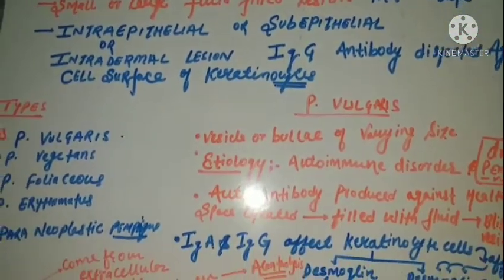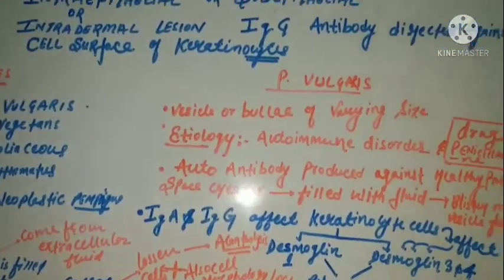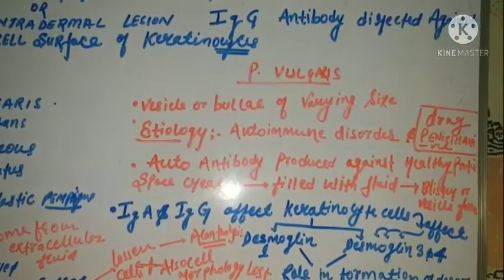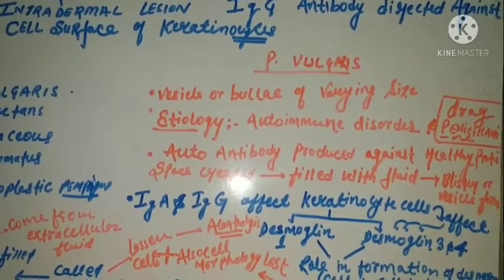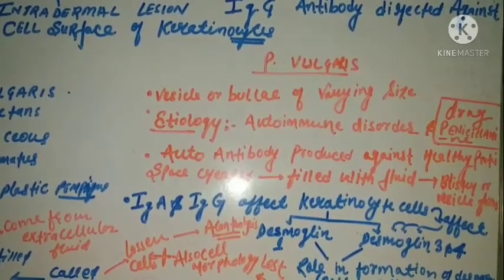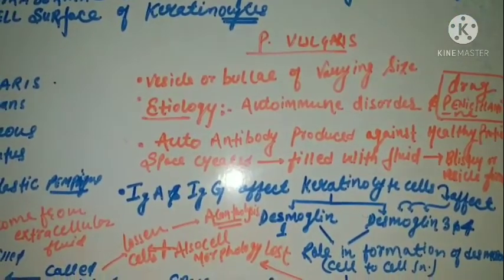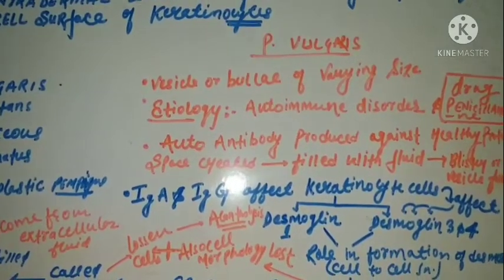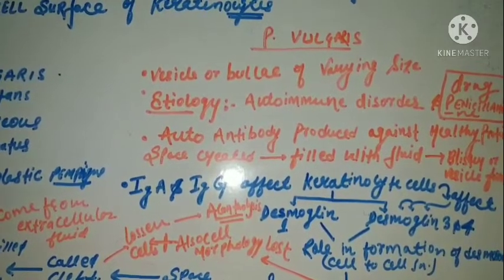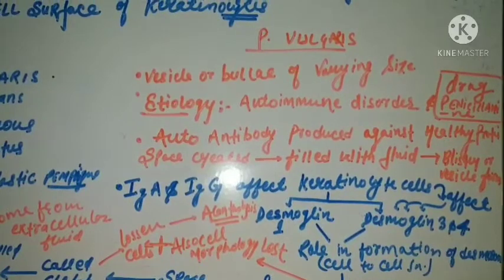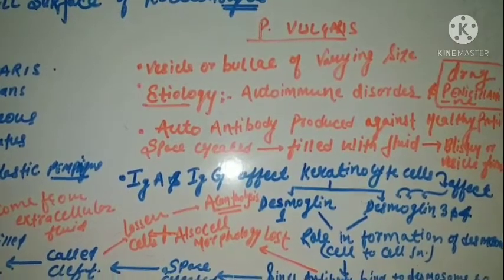The types of pemphigus are: vulgaris, vegetans, foliaceus, erythematosus, and paraneoplastic pemphigus. Focusing on pemphigus vulgaris — the etiology is autoimmune. Drugs such as penicillamine or cocaine are associated with pemphigus. In this autoimmune disorder, IgG antibodies are created against desmoglein 1 and desmoglein 3, which are critical for desmosome formation — the cell-to-cell junction.